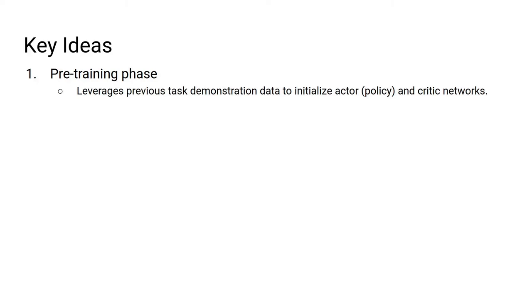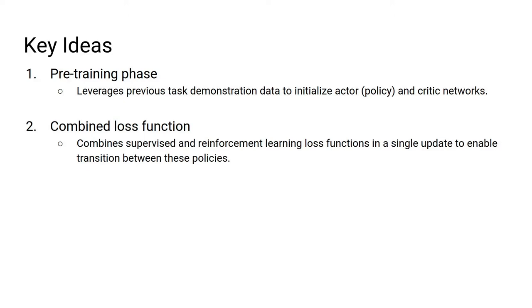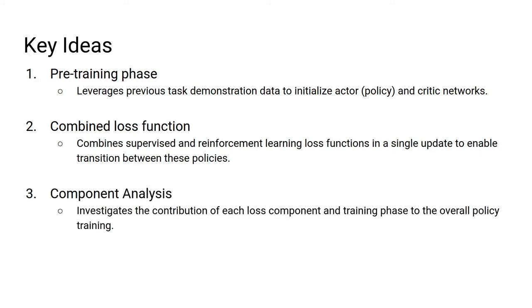The key ideas we present in this paper are: first, a pre-training phase, where we load previous human demonstrations and train the actor and critic networks without interacting with the environment; second, a combined loss function, where we combine supervised and reinforcement learning loss functions in a single update to train the agent; and third, a component analysis to investigate how the pre-training phase and each loss component contributed to the overall policy training.